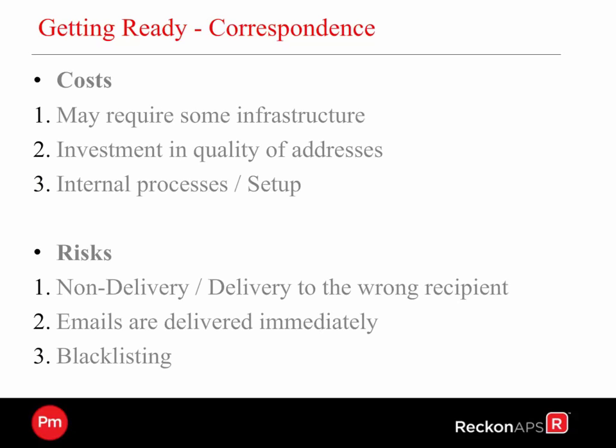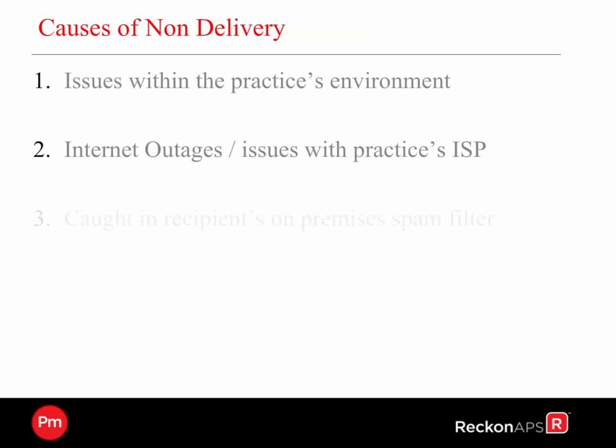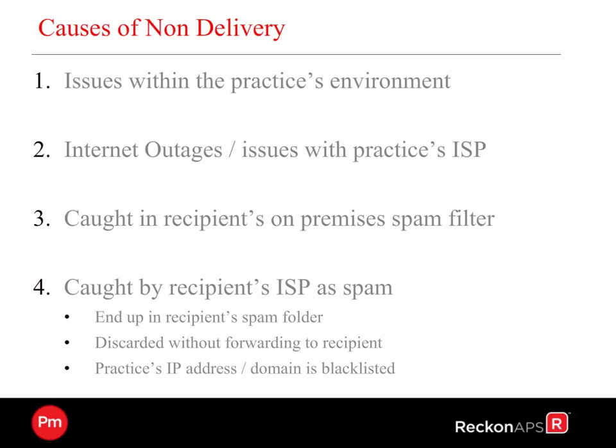The risks in terms of outputting your information — the risk is non-delivery, or delivering to the wrong recipients. Emails are delivered immediately, which has its pros and cons. The other item to consider is blacklisting, and we'll explain more of that further. So what are the causes of non-delivery of email? The first could be that there is something wrong with the environment that you're sending from — the SMTP credentials are incorrect. Remember, Reckon APS passes those credentials to the SMTP server, so we need to make sure we've got the right credentials from your IT manager and support. Secondly, internet outages — it could be issues with the internet generally with your ISP, internet service provider.